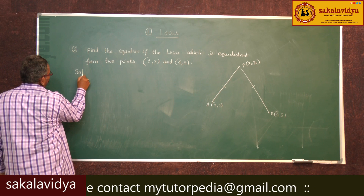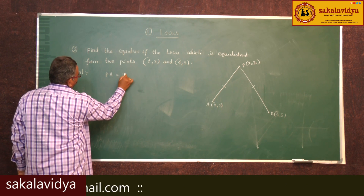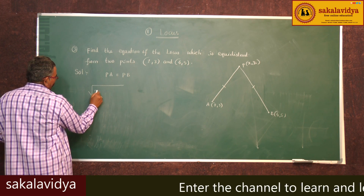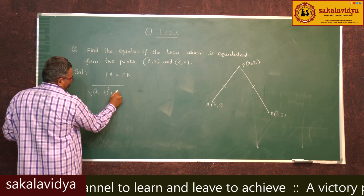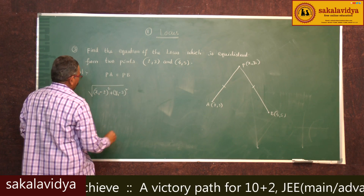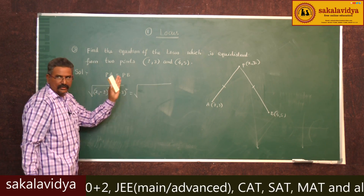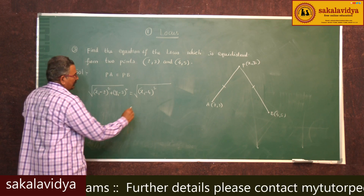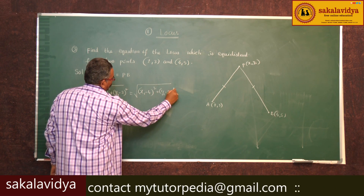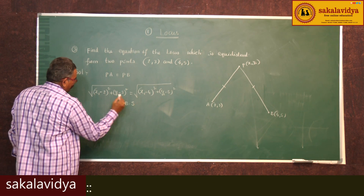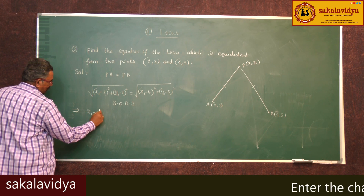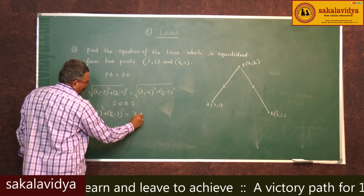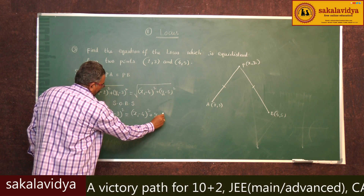Solution: PA is equal to PB. Using the distance formula, PA equals the square root of (x1 − 2)² + (y1 − 3)², which equals PB, the square root of (x1 − 4)² + (y1 − 5)². Squaring both sides, we get (x1 − 2)² + (y1 − 3)² equals (x1 − 4)² + (y1 − 5)².